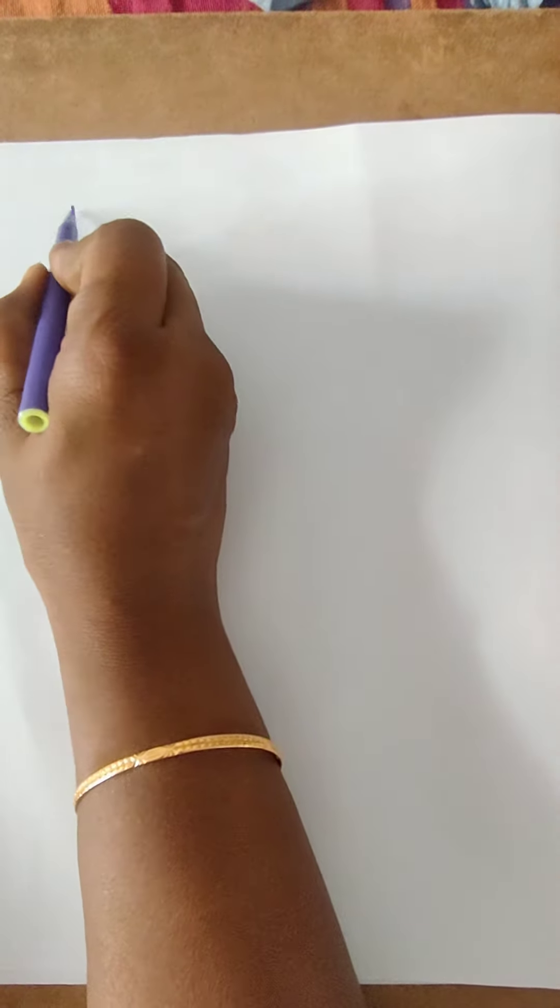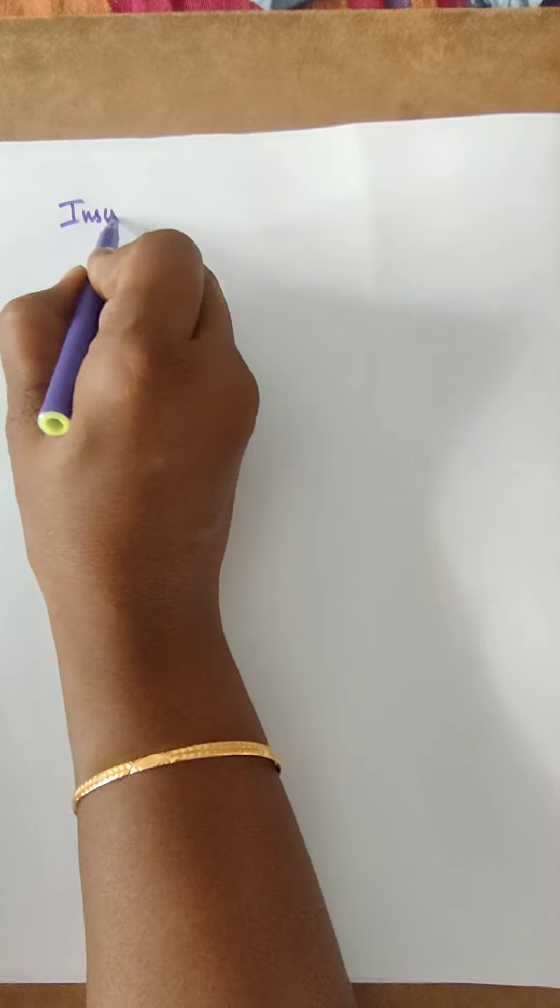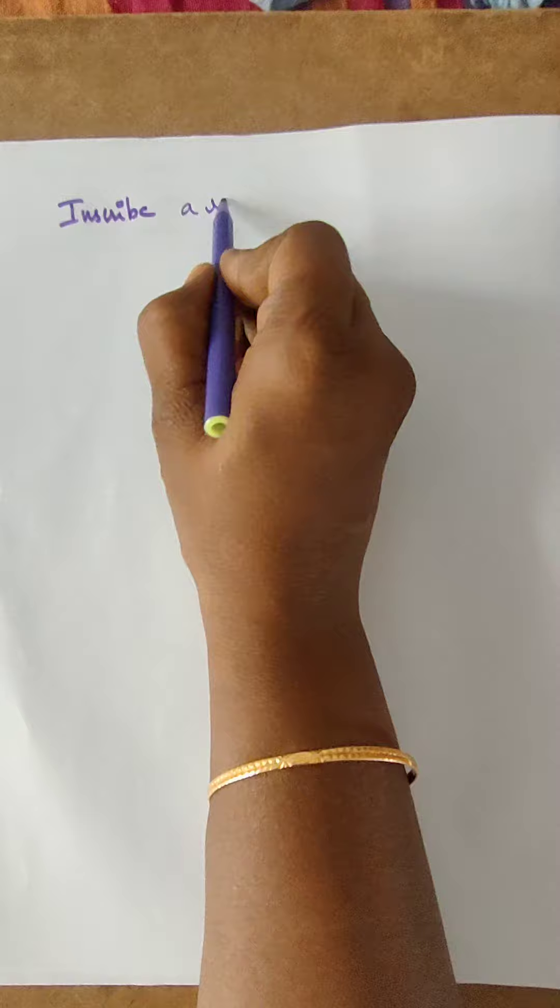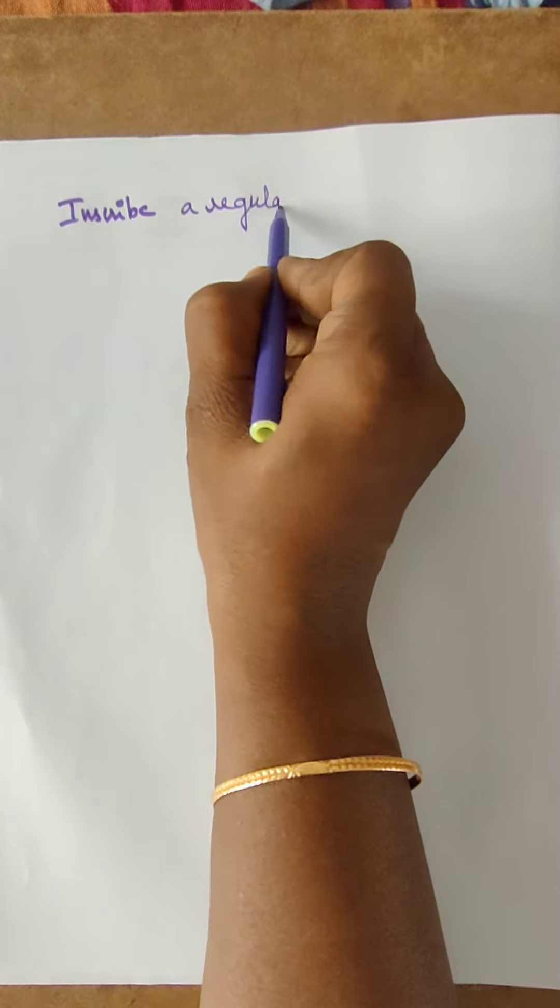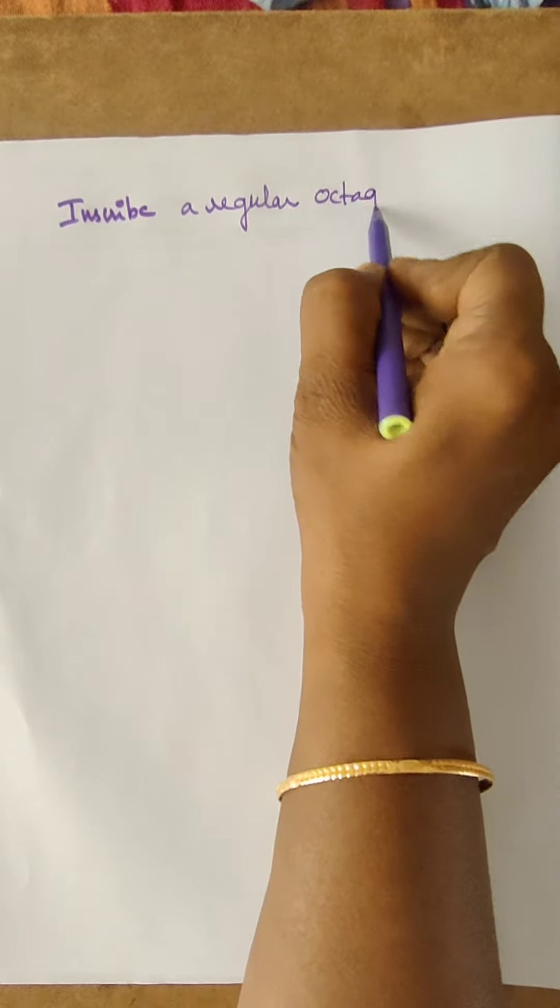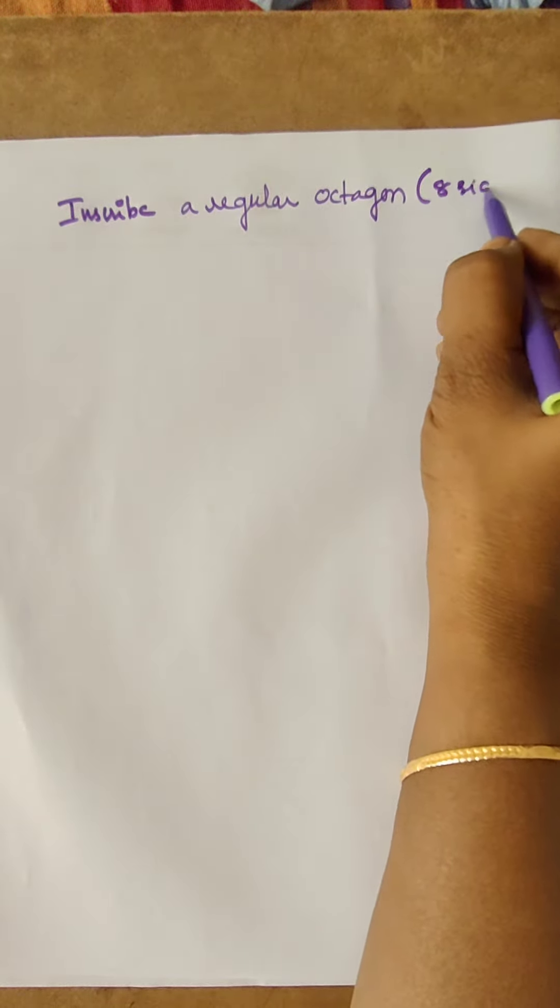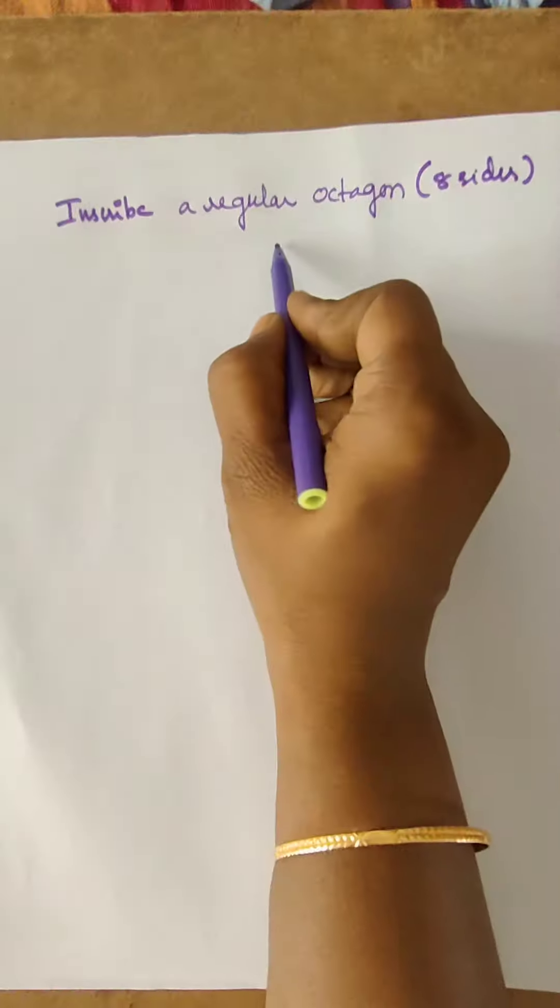Hi friends, today I am going to explain how to inscribe a regular octagon. Octagon means eight sides in a given circle.